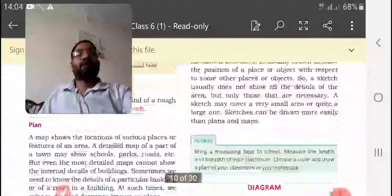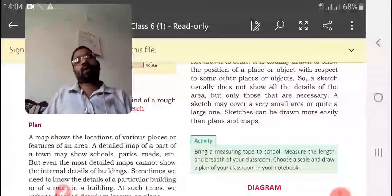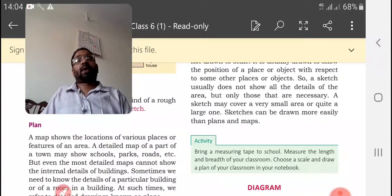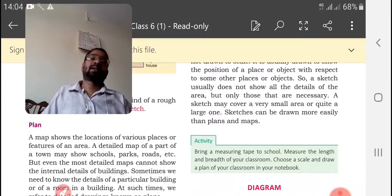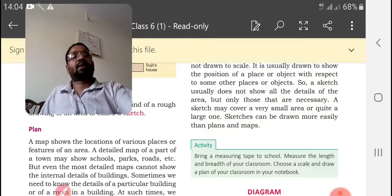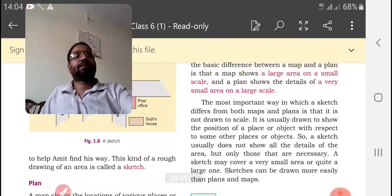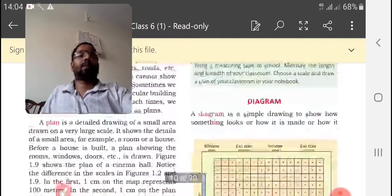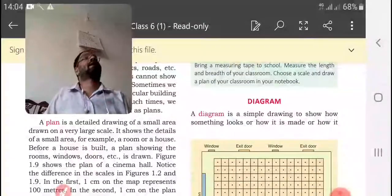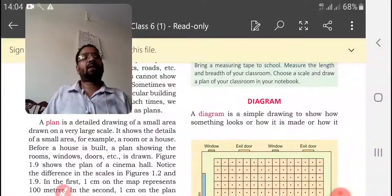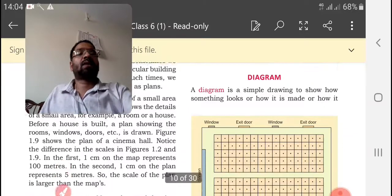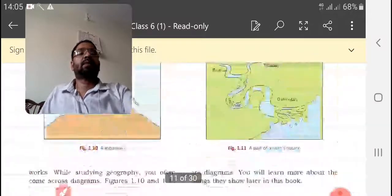Then a plan. Plan is a detailed drawing. Usually we are making plan to construct a school or construct a building. We are drawing on a paper on large scale. Then diagram. A diagram is a simple drawing to show how something looks or how it is made, or how it works.